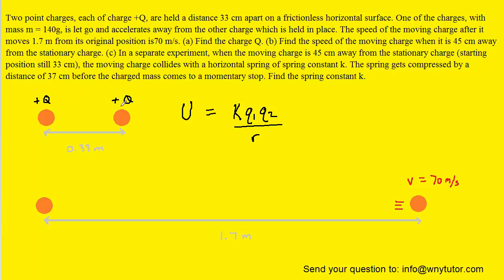The charges are both positive Q, so we substitute positive Q in for Q1 and Q2. The distance between them is 0.33, so we can fill that in.